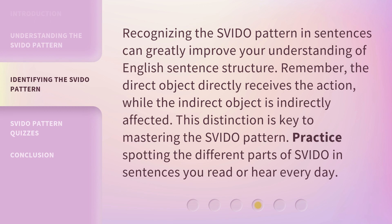Recognizing the SVIDO pattern in sentences can greatly improve your understanding of English sentence structure. Remember, the direct object directly receives the action, while the indirect object is indirectly affected. This distinction is key to mastering the SVIDO pattern. Practice spotting the different parts of SVIDO in sentences you read or hear every day.